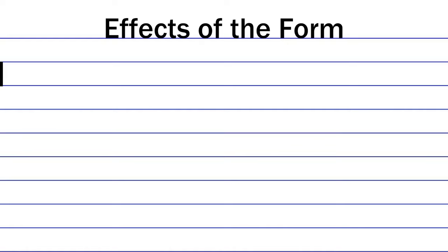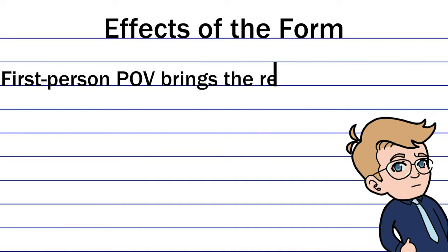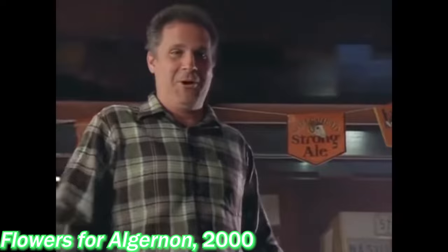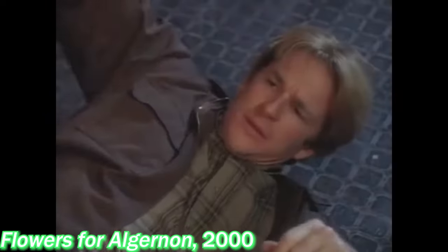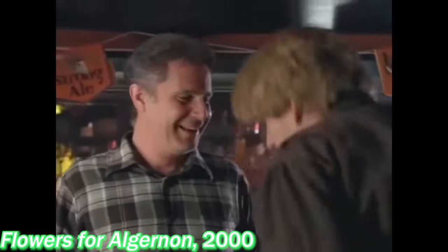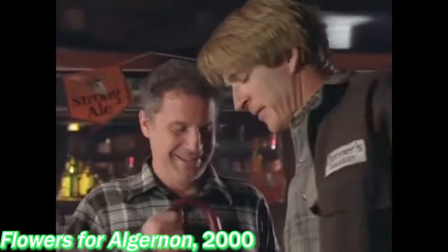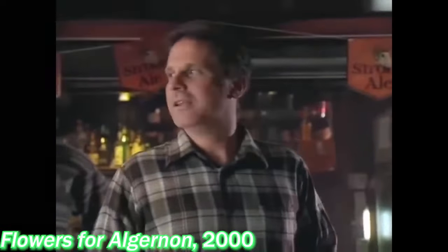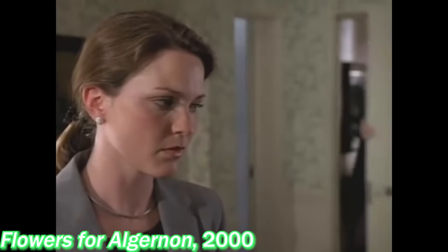For starters, we as readers feel more sympathetic to Charlie when we can see his thoughts. When you understand the world as someone else sees it and feel the same things they do, they affect you much more personally — which is an effect that Keyes would not have been able to achieve had he not given us a window directly into Charlie's thoughts. This makes Charlie's struggle so much more emotionally impactful for the reader. We feel so much sympathy for him when he's getting bullied at his job, and we understand more clearly why he acts the way he does, because his emotions and thoughts are laid out plainly for us to view.